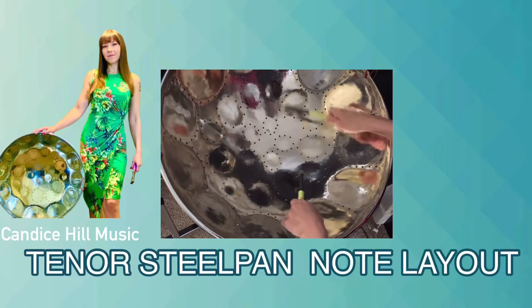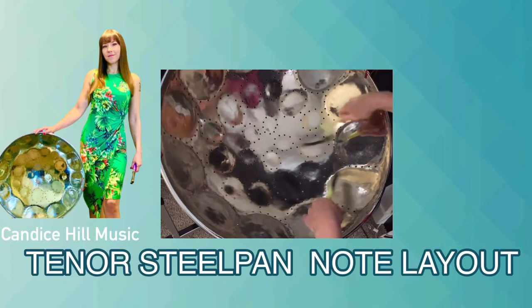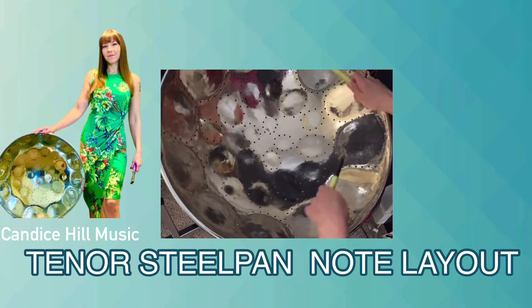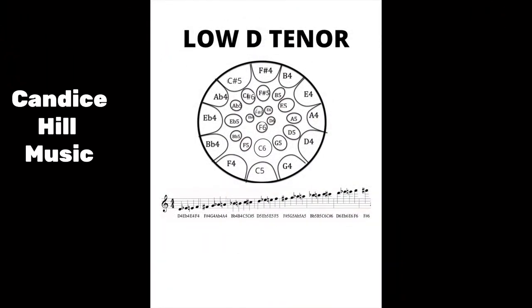This lesson is going to be outlining the diagram of a tenor pan, and I just wanted to make a few notes about it before we start. If you are playing on a low D tenor pan, there will be some slight modifications from what I'm talking about in the diagram, as it is based off of the low C tenor pan, but the modification is very very small and you'll see how it's extremely similar.